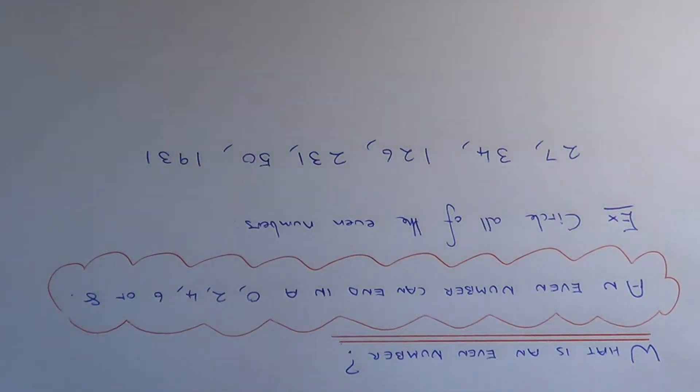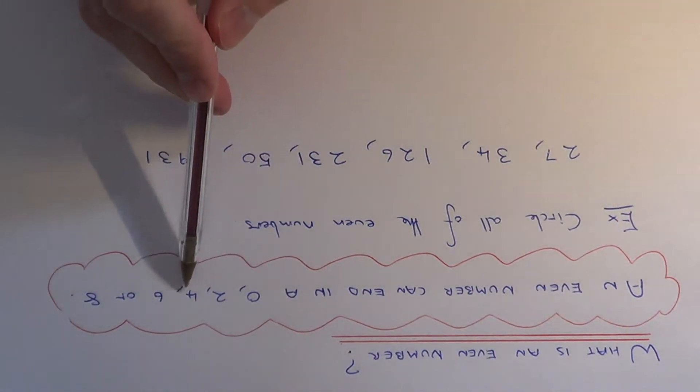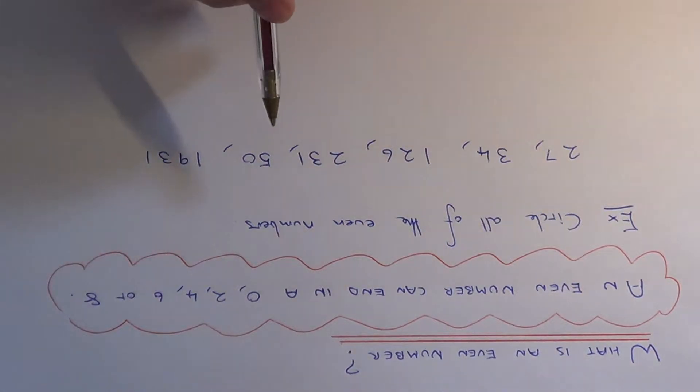Well, to decide if a number is even, all you need to do is look at the last digit of your number and decide if it ends in a 0, 2, 4, 6 or an 8.